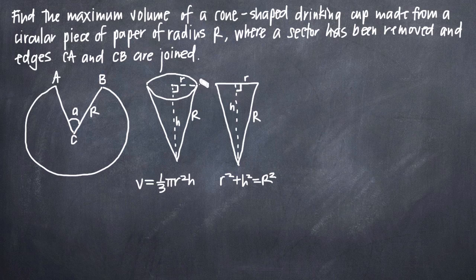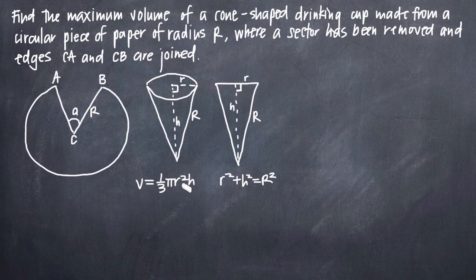Since we're being asked for the maximum volume of this cone-shaped cup, we need the equation for the volume of a cone: volume equals one-third pi r squared h. Our next step is to realize that at the end of this problem, we're going to need to get this volume equation completely in terms of capital R. Right now we have it in terms of lowercase r and h, so we're going to have to find some way to relate capital R with lowercase r and h.